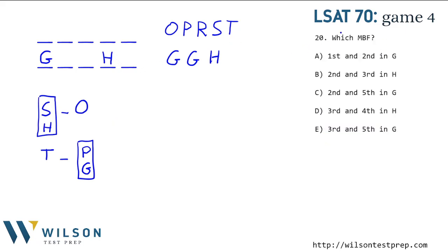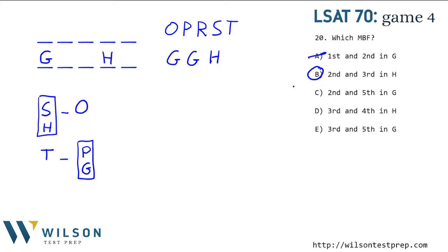Number 20 asks which of the following must be false. We have five answer choices and we're going to try them out to see if we get a contradiction. If the first and second are in G, I need another G and an H somewhere — I don't see a problem, so moving on. Second and third in H — okay, there's a problem. That's three H's. We don't have room for three G's, so this must be false. We can't have H, H, H.